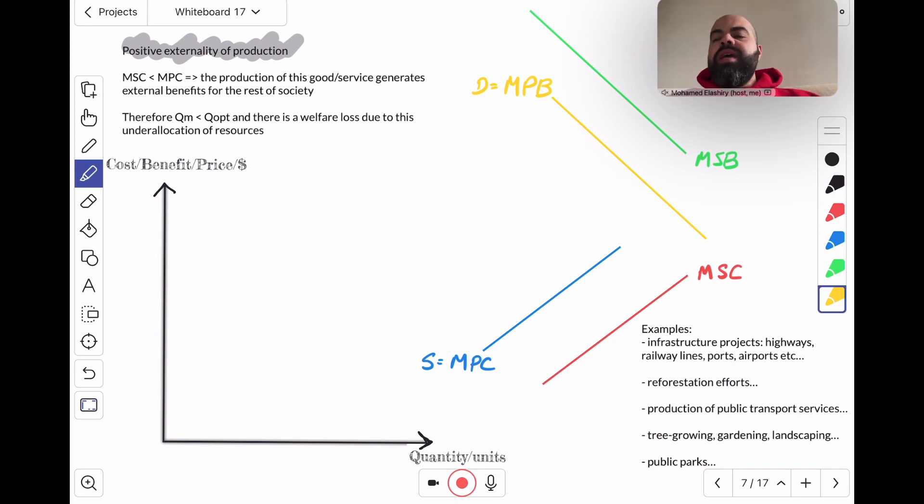What are they? Well, basically, a positive externality of production occurs when the production decision of a producer generates external benefits or positive externalities for the rest of society. So one producer's production decision is actually generating benefits for the rest of society. In this case, the marginal social cost will be lower than the marginal private cost, because when you add that external benefit to the marginal private cost to get the marginal social cost,